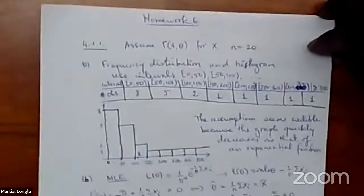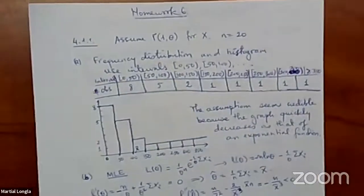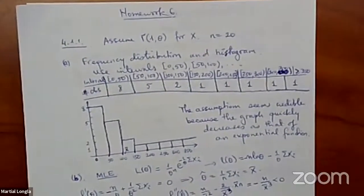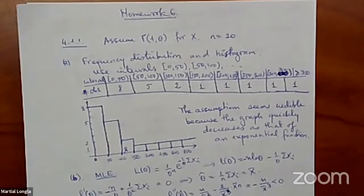We are already live. We're talking first about solutions to homework, and then we will continue talking about hypothesis testing — specifically chi-squared tests. Can everybody see that?